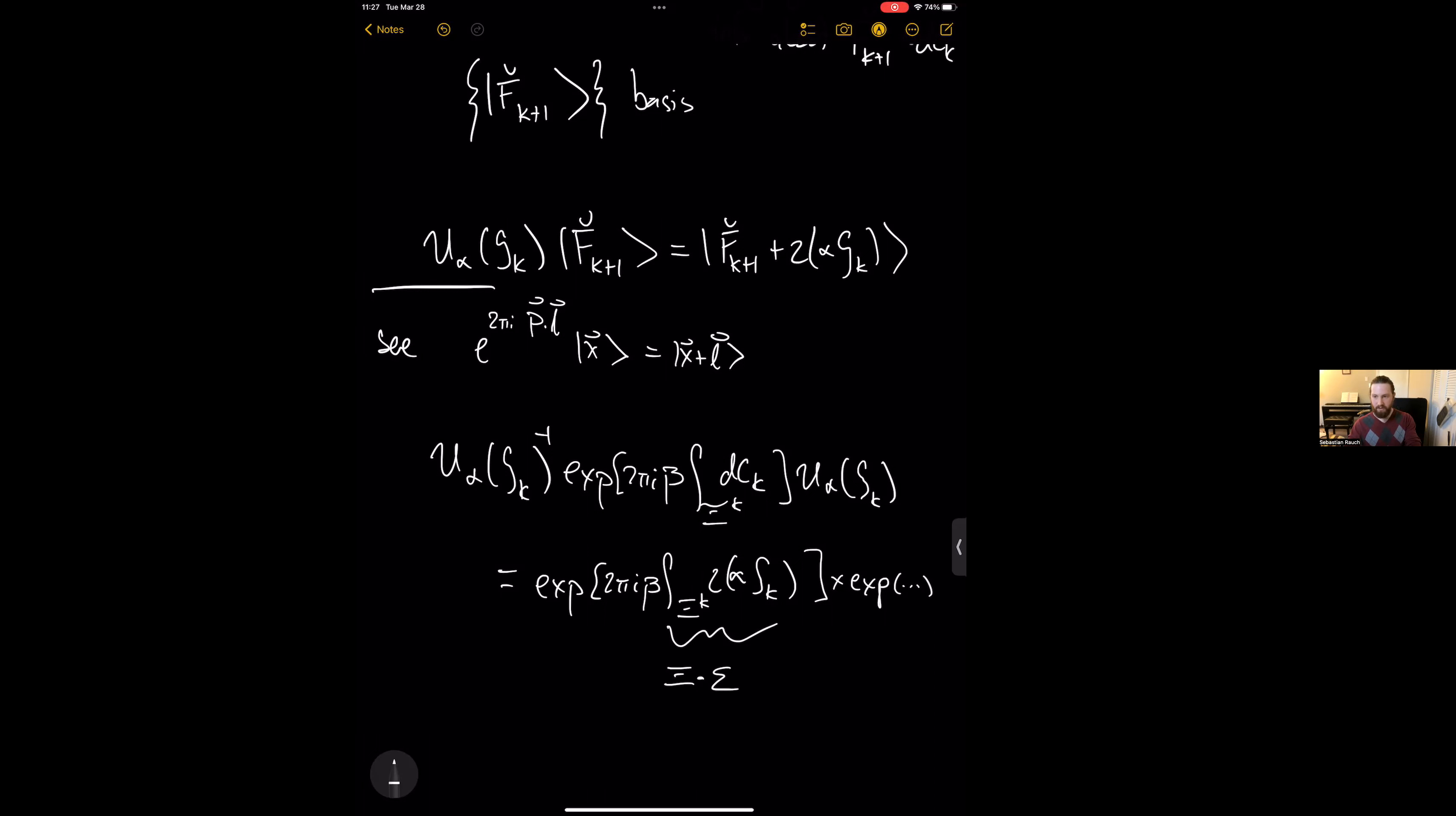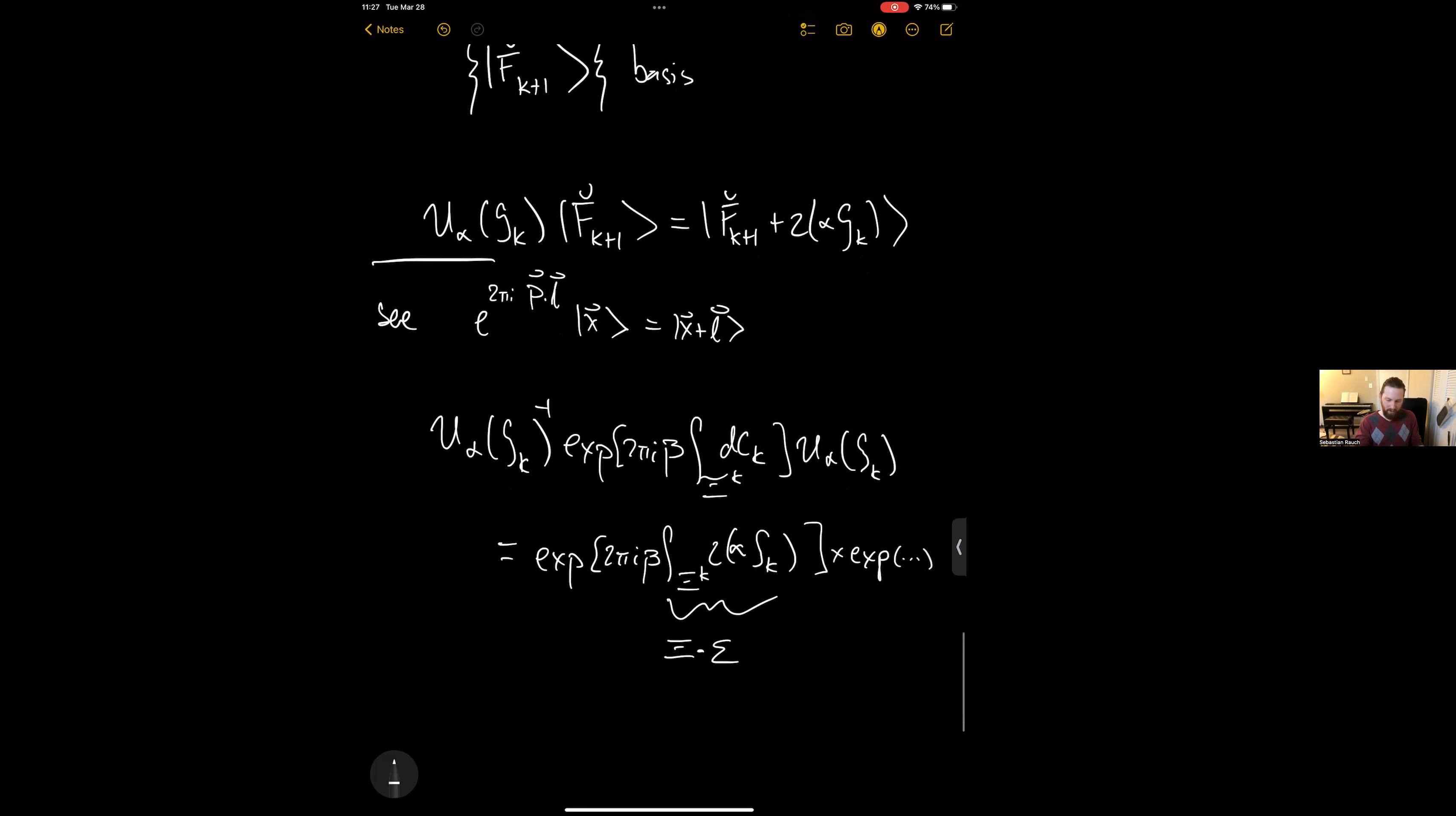So to generalize this to the setting at hand, we have to take into account both the Chern-Simons term in the Sugra action as well as the Wess-Zumino-Witten terms in the D brane actions. Putting this all together allows us to compute all these commutation relations.